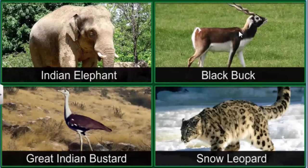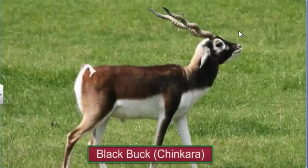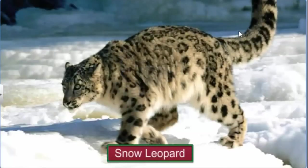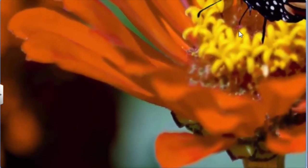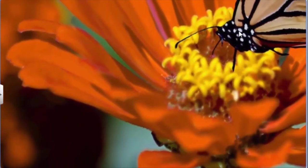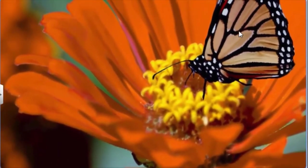Several other animals have been included in the list of protected animals with a legal ban on their hunting and trade. These include the Indian elephant, the black buck or chinkara with its beautiful spiral horns, the great Indian bustard, and the snow leopard. Today, conservation efforts in India are expanding their scope to include even insects and plants in the list of protected species.